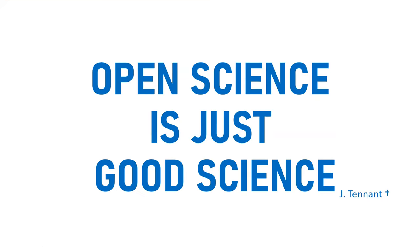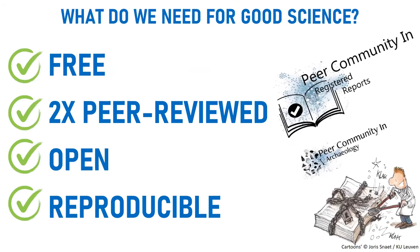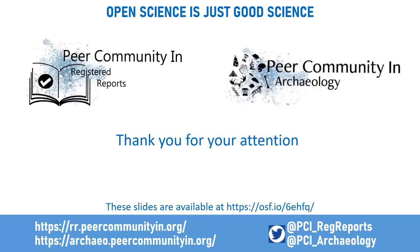To summarise, this is about promoting open science — following the sentiment by Jon Tennant that open science is just good science. Open science needs to be free, peer-reviewed — here twice — open, and reproducible. All of this is true with Peer Community in, and especially for the two-stage peer review with PCI Registered Reports. You can find these slides on the OSF repository and find us on our website or Twitter account. Thank you for your attention.